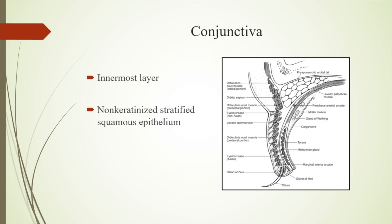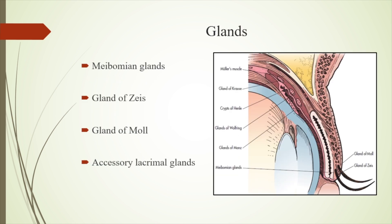The last layer is the conjunctiva — the innermost layer. It is a non-keratinized stratified squamous epithelium and provides the moist surface for the lids. The lids also have a few glands: the meibomian glands, glands of Zeis and Moll, and the accessory lacrimal glands.